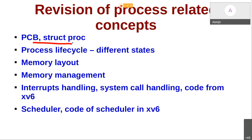We saw a lot of code in the Xv6 codebase. Then we began discussing the lifecycle of a process — the different states a process goes through like runnable, ready, running, waiting, and exited. Then we saw the memory layout of a process in Xv6, basic concepts of memory management, how interrupts are handled in general and in Xv6, concepts of system call handling in Xv6, and the code of the scheduler in Xv6.